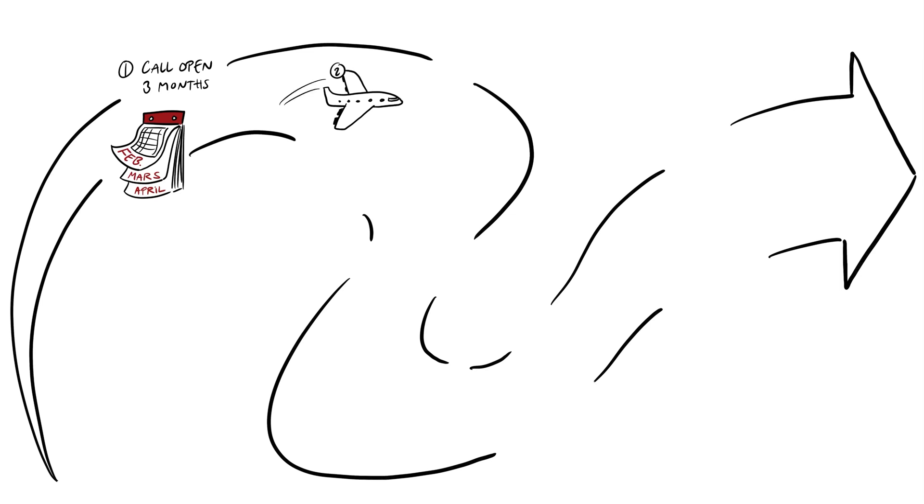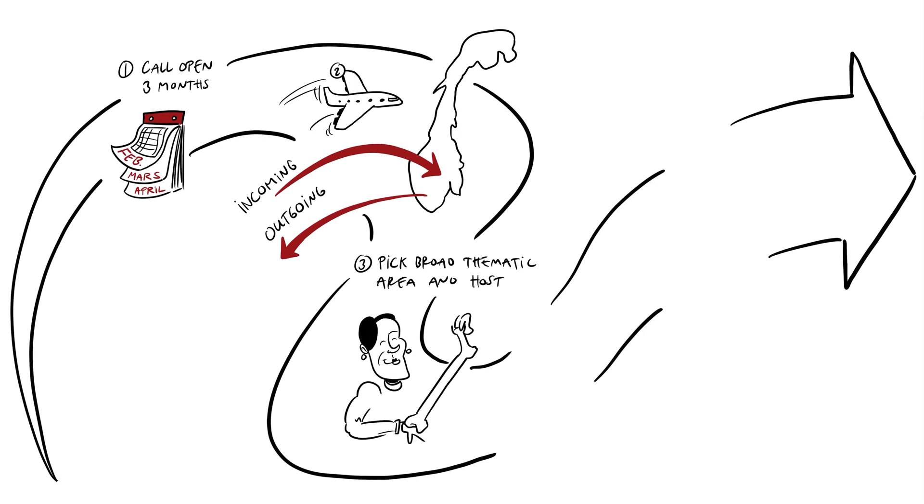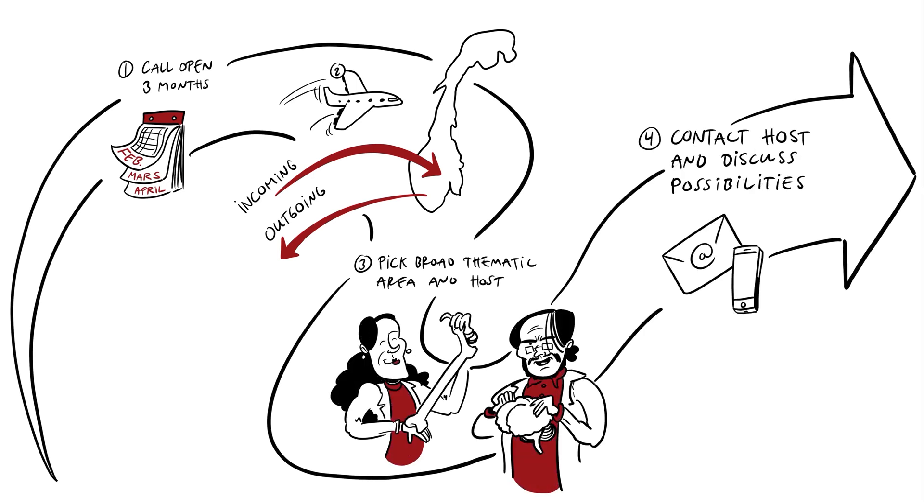There are two mobility types to choose from, incoming and outgoing. Pick one of the thematic areas and your preferred host. Contact the host. You will find more details about how to become a fellow on our website.